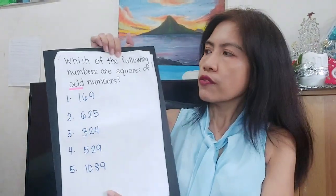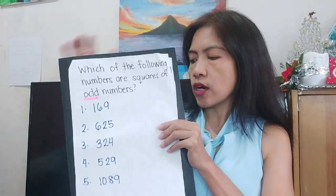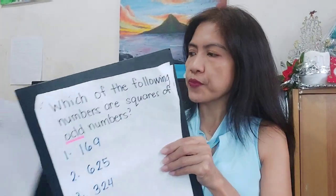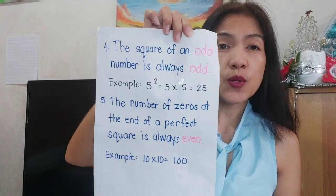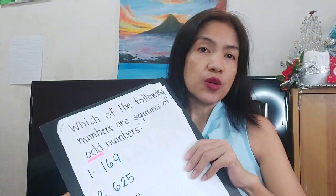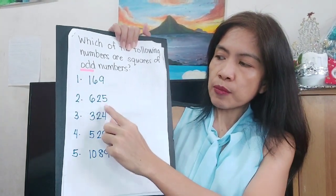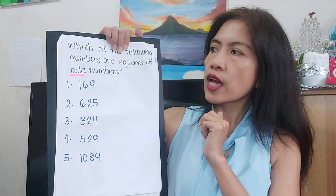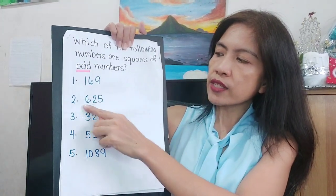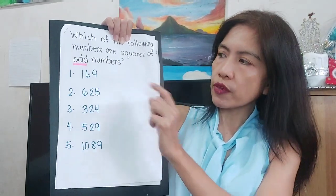Let's have some drill. Which of the following numbers are squares of odd numbers? Remember: the square of an odd number is always odd. So the odd numbers among our choices are 9, 5, 9, and 9. The answers are 169, 625, 528, and 1,089, because squaring those gives odd results.